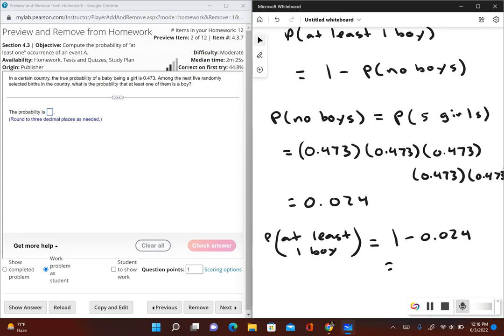This will give us 0.976. So this would be the probability that at least one of those babies in the five births is a boy.